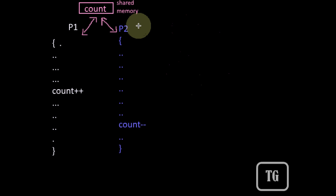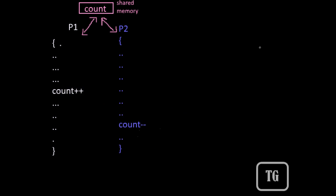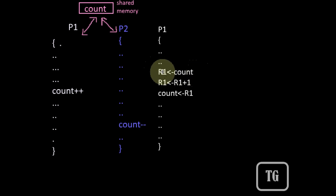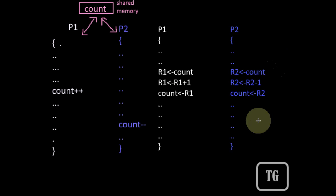What if both processes are executed in parallel? When converted to machine language, the increment or decrement operation consists of three sets of operations: moving the value of count to a temporary register, changing the value within the register, and updating count with the value of the register. The same applies to the decrement operation.